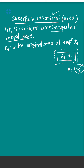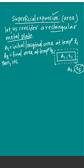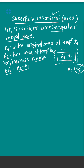So A2 represents the final area at temperature T2, meaning there is an increase in area. The increase in area is denoted by delta A, and the increase in temperature is denoted by delta T, where delta T equals T2 minus T1.